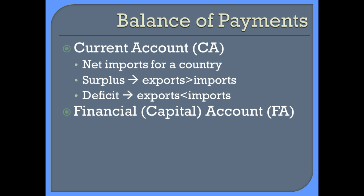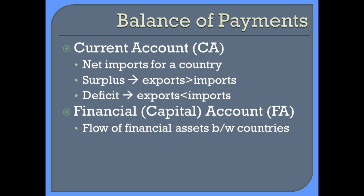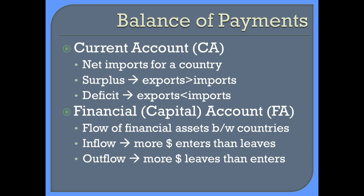The other account is known as the financial or capital account, and that looks at the flow of financial assets between countries — investments and whether money is coming into or exiting a country. If more money is coming in than is leaving, it's called an inflow, and it's an outflow when more money is leaving than stays in. These two accounts make up what is known as the balance of payments, and they are the inverse of each other. The balance of payments always equals the current account plus the financial account. If you have a trade surplus you'll have net capital outflow, and if you have a trade deficit you'll have capital inflow.